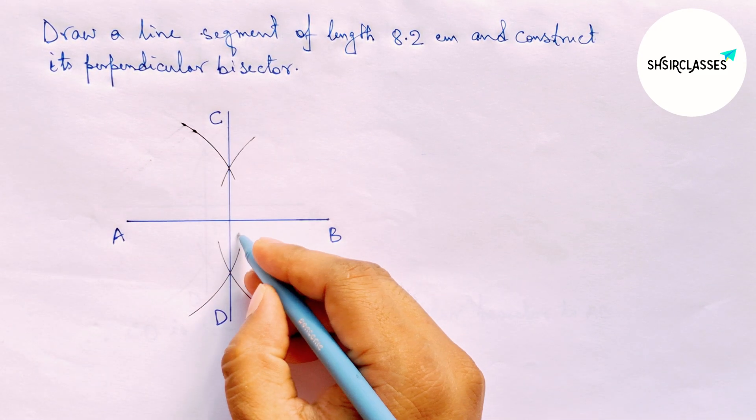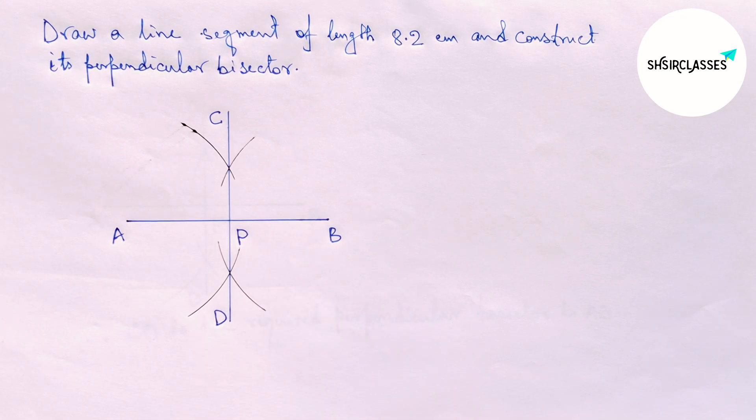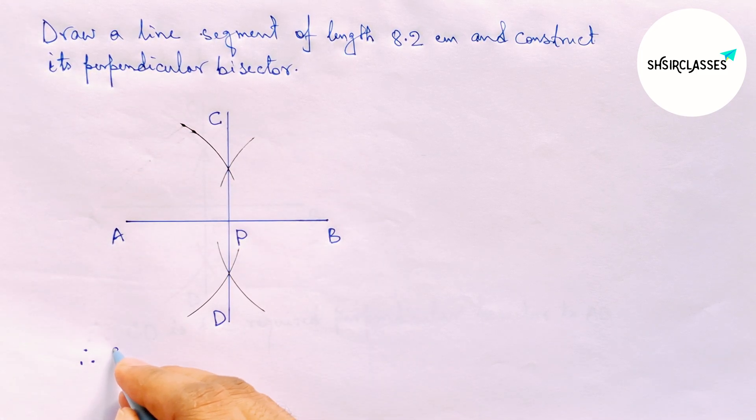AB and CD both intersect here at a point, taking here point P. Therefore, CD is the